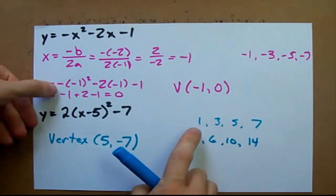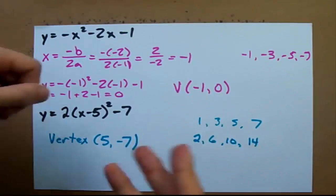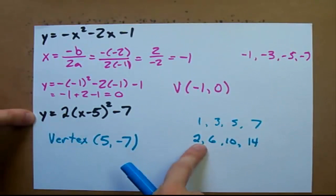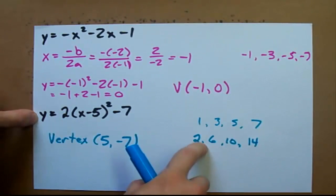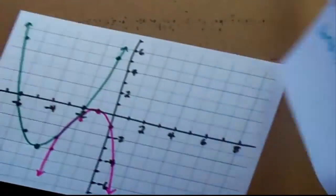Another way to think of this is that normally you go over 1, up 1, over 1, up 3, but the parabola has been stretched vertically by 2. So instead of going up 1, you've got to go up by 2. Instead of going up by 3, you've got to go up 6. Let's graph that.